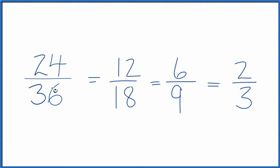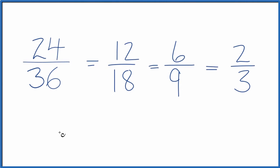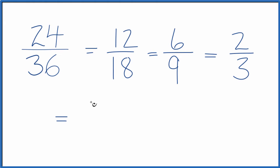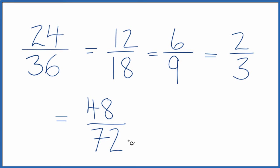Let's do just one more where we don't divide, but we multiply. We're going to multiply the numerator and denominator by 2. 24 times 2 is 48, and 36 times 2 is 72. So 48/72 is another equivalent fraction for 24/36.